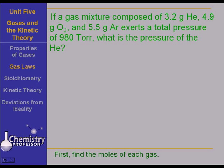Well, the first thing we have to do is find the moles of each gas. So let's start with 3.2 grams helium. The moles of helium is equal to 3.2 grams of helium times 1 mole over 4 grams. That means then that we have 0.8 mole helium.